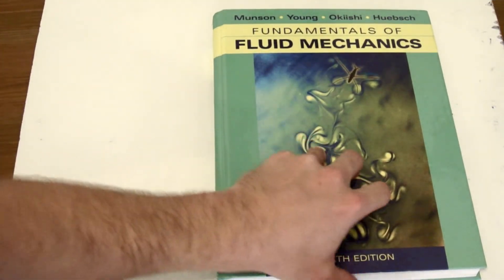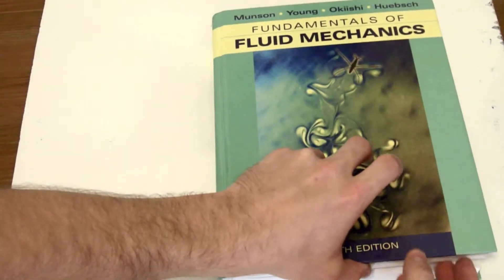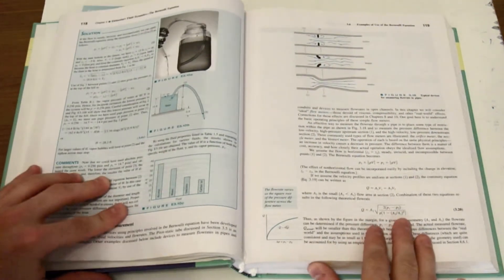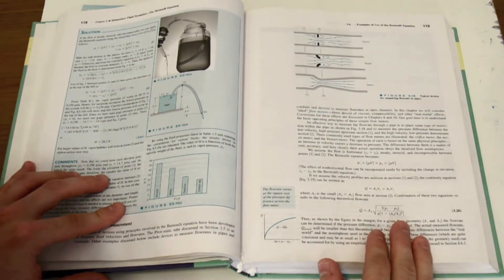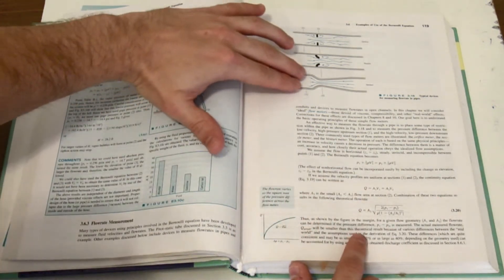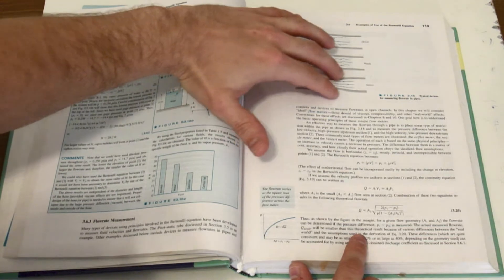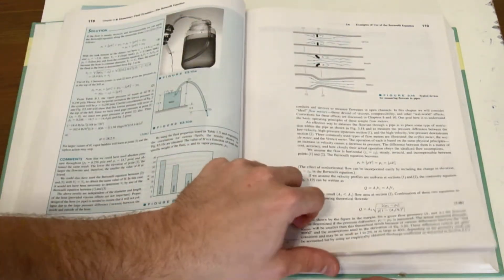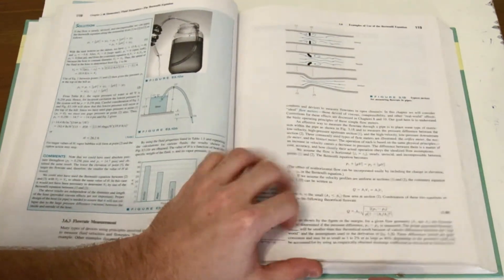So here's my Fluid Mechanics book from college and let's see what they show for venturi meters. So here's the first mention of it in the book. You can see the large tube constricting down then back to the larger diameter in order to generate a differential pressure.